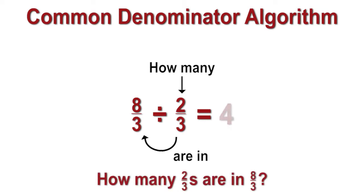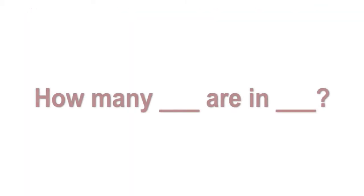When the divisor and the dividend have the same denominator, we are working with the same size pieces, so the size of the pieces is not important. The underlying question is always, how many blanks are in blank?